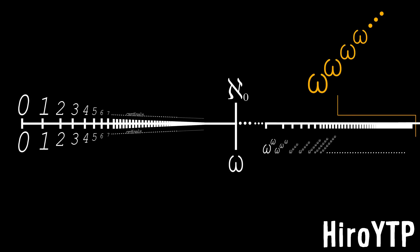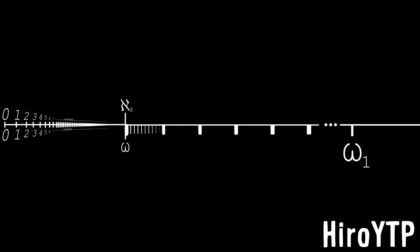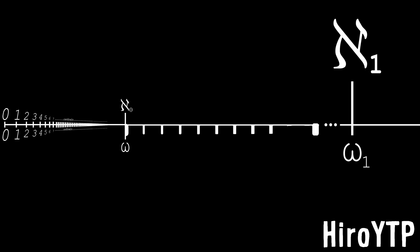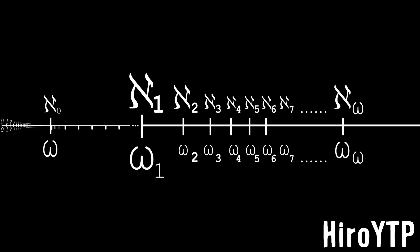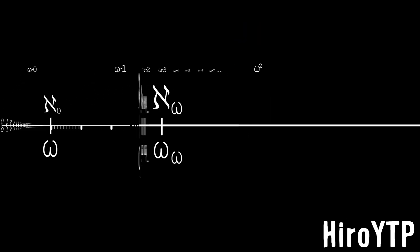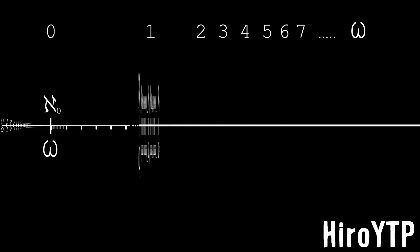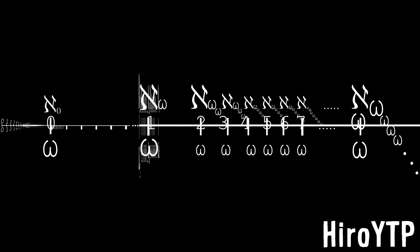Omega to the omega to the omega to the omega to the omega — aleph null. Omega 1, aleph null — omega 1, aleph 1, aleph 1 — omega to aleph, omega squared, aleph omega squared, aleph omega omega omega omega.